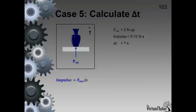Write down the formula for impulse which contains F net and delta t. Substitute the values and solve for delta t.